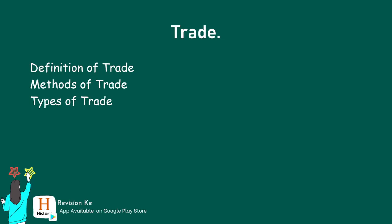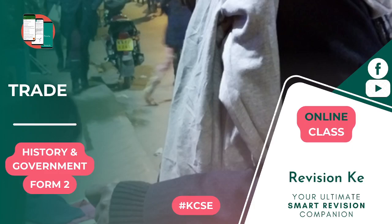We'll also cover the development, organization, and impact of different types of trade. All these notes are available on the Google Play Store — just search for the Revision Ke page or a history app. The one that resembles the icon you can see on your screen is the right one. The beauty of these apps is they work offline, so you don't necessarily need cellular data or wi-fi to read from them.